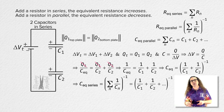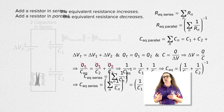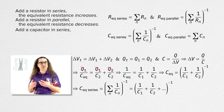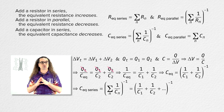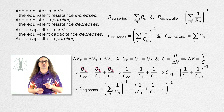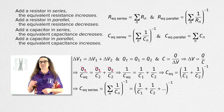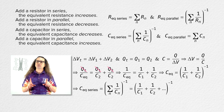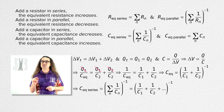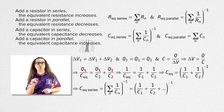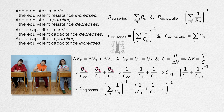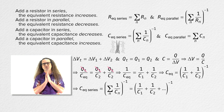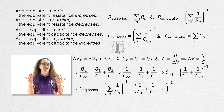Looking at the general concept of capacitors in series and in parallel, from the equations you can see that when we add capacitors in series, the equivalent capacitance goes down, and when we add capacitors in parallel, the equivalent capacitance goes up. Please notice the series and parallel equations for resistors and capacitors are reversed. Thank you very much for learning with me today. I enjoy learning with you.